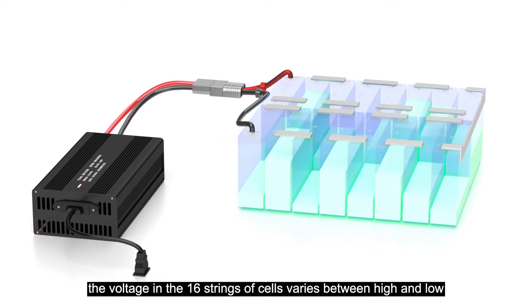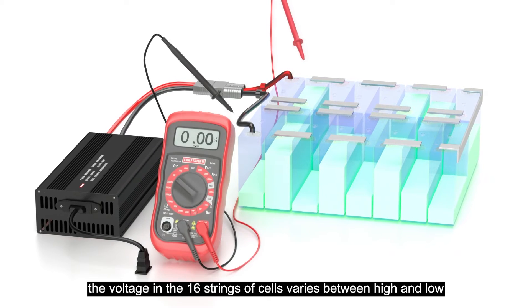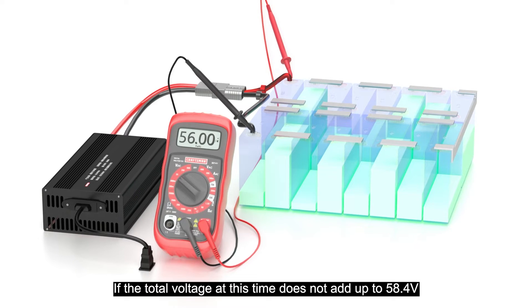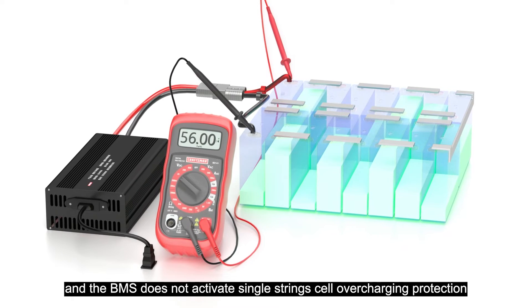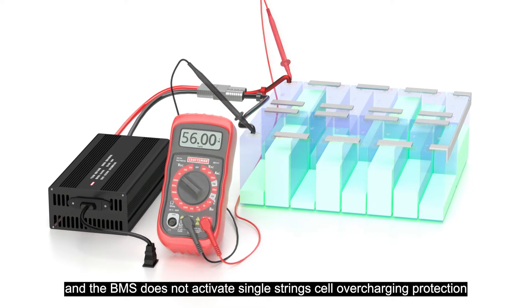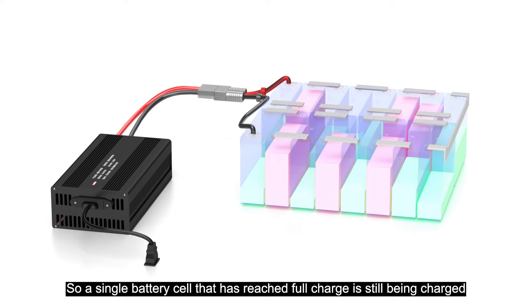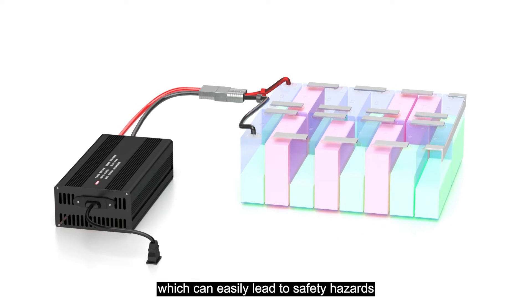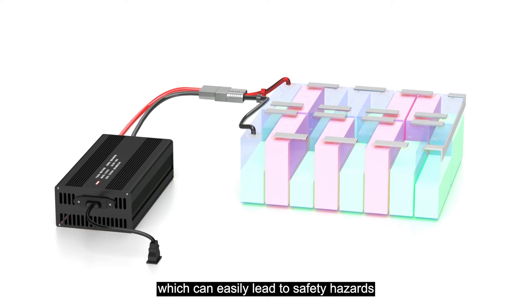the voltage in the 16 strings of cells varies between high and low. If the total voltage at this time does not add up to 58.4V and the BMS does not activate single-string cell overcharge protection, a single battery cell that has reached full charge is still being charged, which can easily lead to safety hazards.